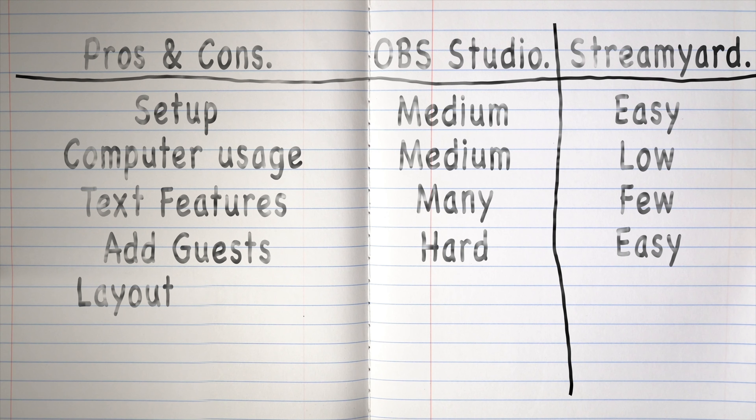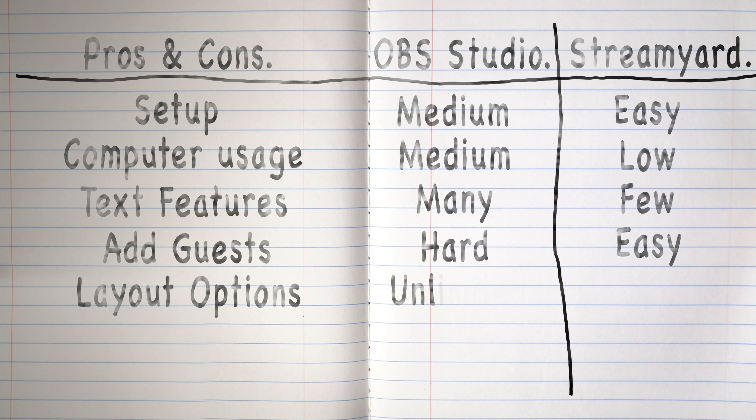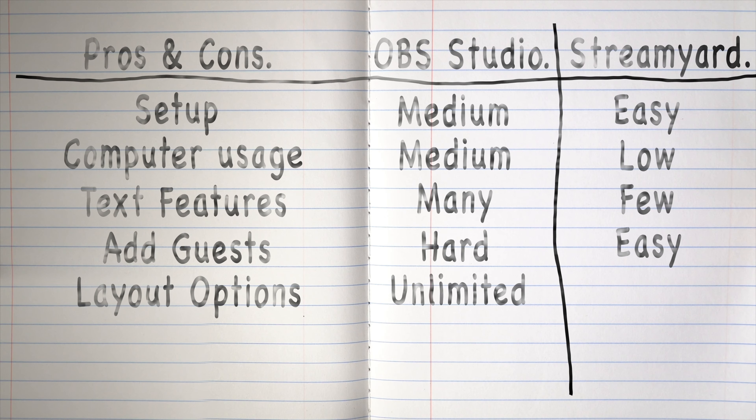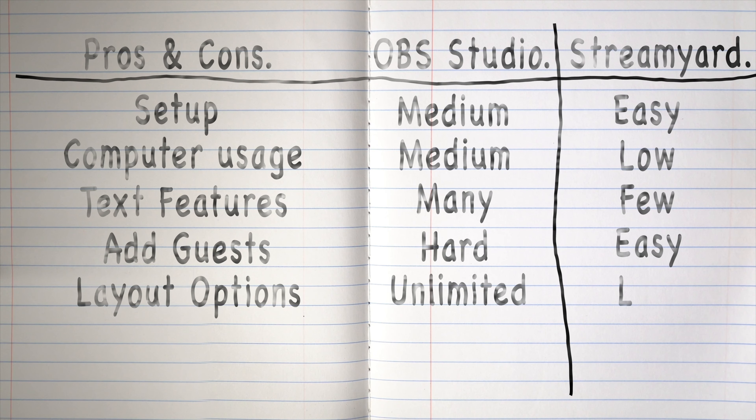What sort of layout options do you get with these applications? With OBS Studio, your layout is unlimited — you can use as many assets as you want and place them anywhere on the screen. StreamYard has a very limited number of layout options due to the fact that it's a web app. They've gone for ease of use instead of lots of options to help new people get into live streaming quickly.